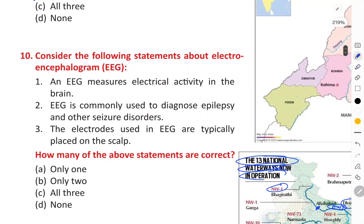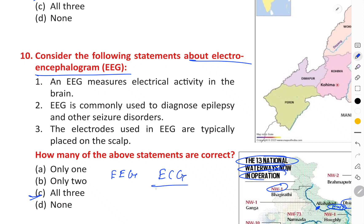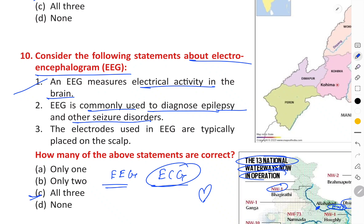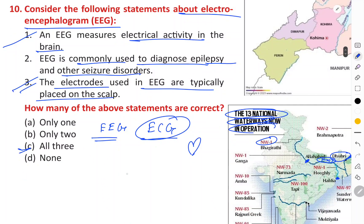The next question is about the electroencephalogram (EEG). All statements given here are correct. EEG measures the electrical activity in the brain — this is a great option. There are two things: ECG is for the heart (electrocardiogram) and EEG is the electroencephalogram. It is commonly used to diagnose epilepsy and other seizure disorders. Electrodes are placed on the scalp for the EEG.